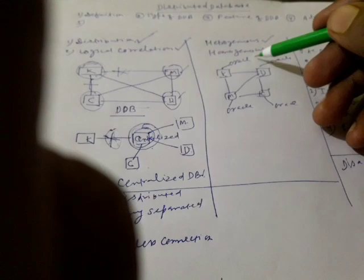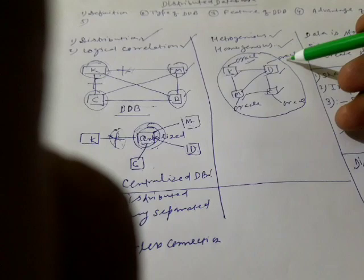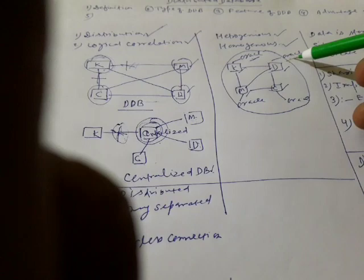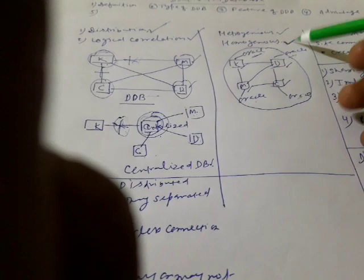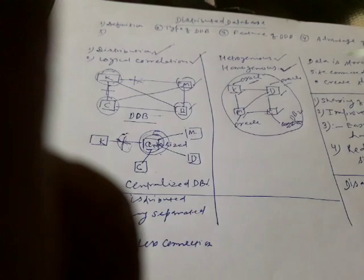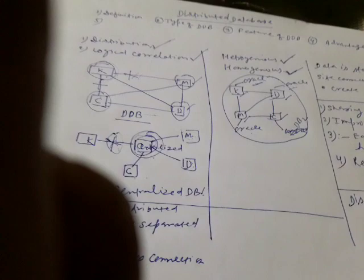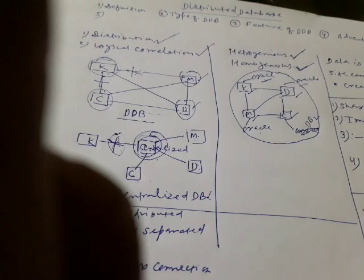In a homogeneous distributed database, all sites — Kolkata, Mumbai, Chennai, and Delhi — follow the same database structure. For example, if all sites use Oracle, then all are the same, and this is called a homogeneous distributed database. If at least one site uses a different system, like DB2, then it is called a heterogeneous distributed database. Heterogeneous means at least one site is non-Oracle.